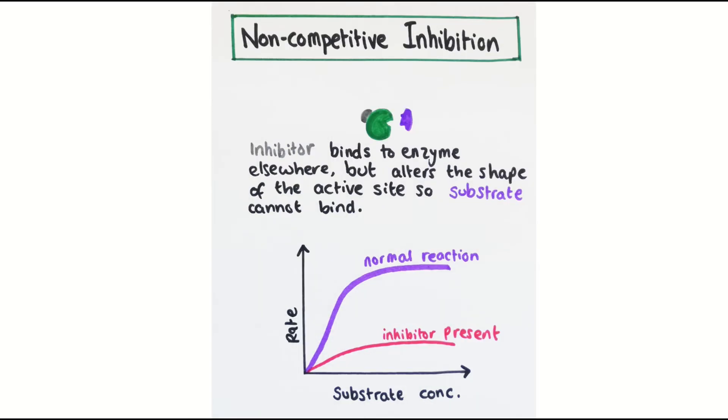Non-competitive inhibitors attach to the enzyme at a point other than its active site. But in doing so, they cause a change to the shape of the active site so that the substrate can no longer bind. Because increasing the substrate concentration can't stop the inhibitor from binding, raising the substrate concentration does not have much effect on the rate of reaction and it remains low.